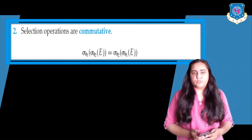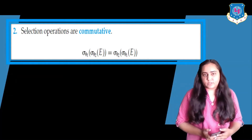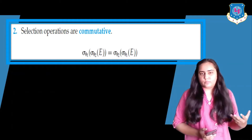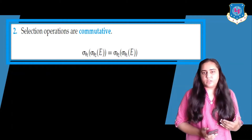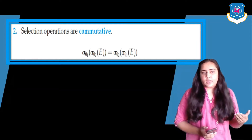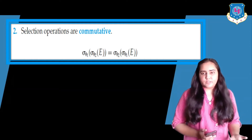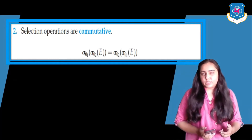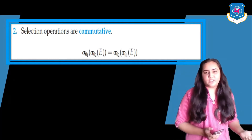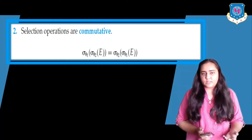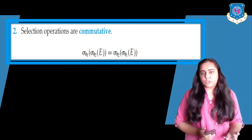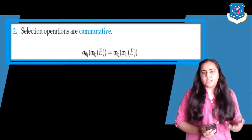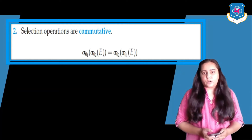Another rule says that selection operations are commutative. If I have a select operation on a table named E, on the left-hand side I first apply theta 2 on E and then theta 1. On the right-hand side I apply theta 1 first and then theta 2, and it doesn't matter because these select operations are commutative.